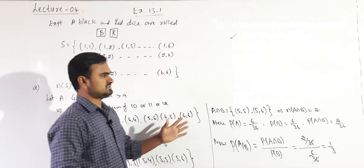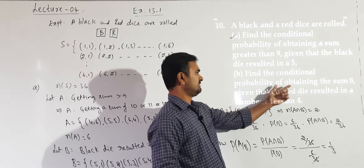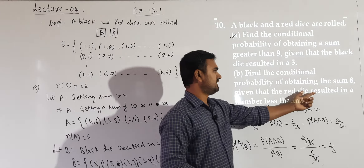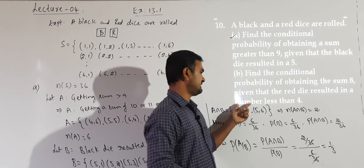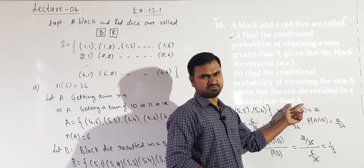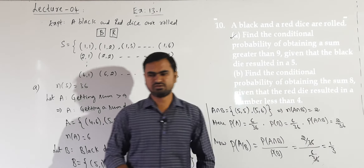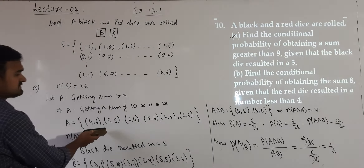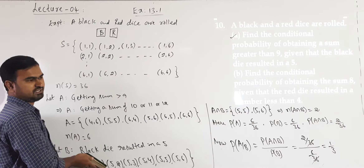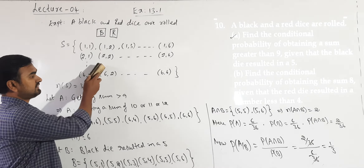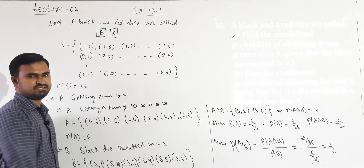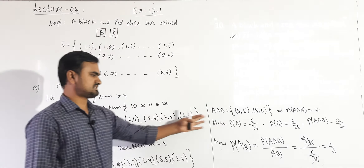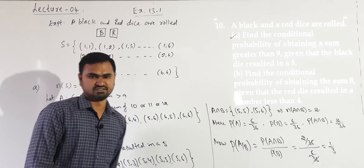Similarly, you can solve the second part: find the probability of obtaining a sum of 8, given that the red die resulted in a number less than 4. Try to solve it on your own by defining the events clearly, writing the elements correctly, finding the intersection, then applying the conditional probability formula.